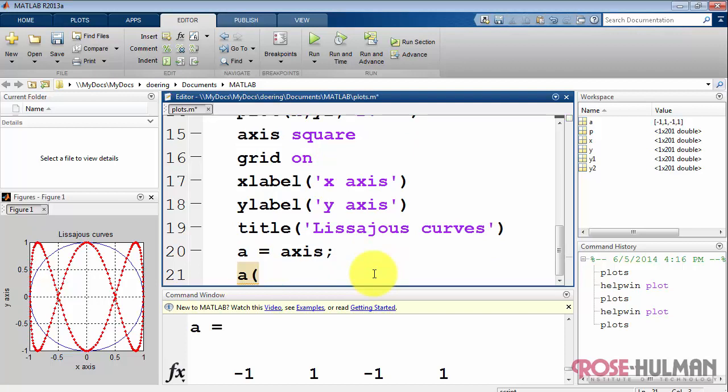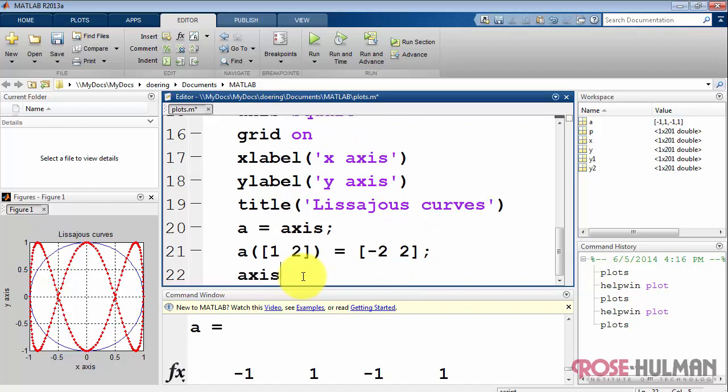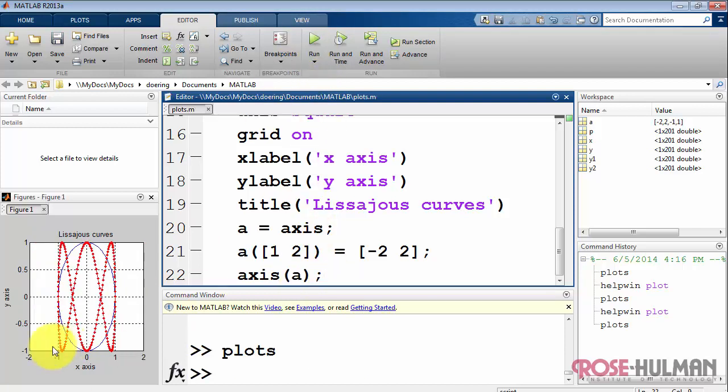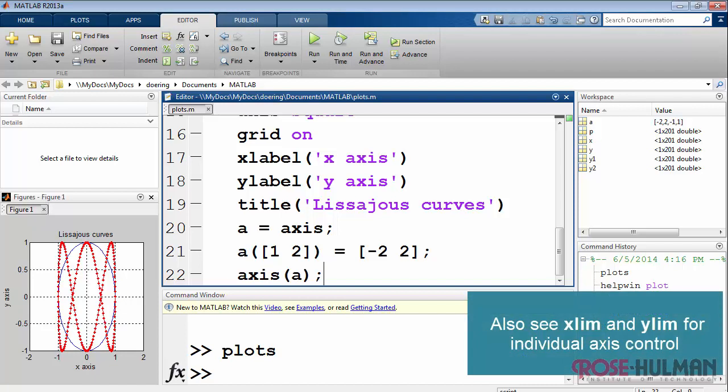So here's how you can adjust the axis limits yourself. I'm going to replace the first two entries of array a. That is, index values 1 and 2. I'm going to replace that with an array of values, minus 2 to 2. And then I say axis and then I specify that variable a. And that gives me the adjustment to the x-axis while also setting the y-axis limits again. You can also use xlim and ylim to control each axis limit independently.